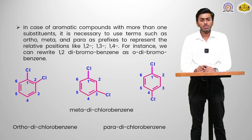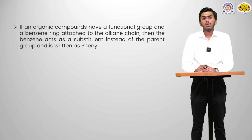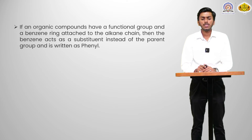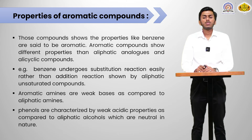Ortho-dichlorobenzene shows that chlorine is attached to positions one and two on the benzene ring. Meta-dichlorobenzene is 1,3-dichlorobenzene with one chlorine at position one and the second at position three. Para-dichlorobenzene is 1,4-dichlorobenzene with one chlorine at position one and the second at position four. If an organic compound has a functional group and a benzene ring attached to an alkane chain, the benzene acts as a substituent written as phenyl. Examples are 1-phenylpropan-1-ol and 1-phenylethanol.